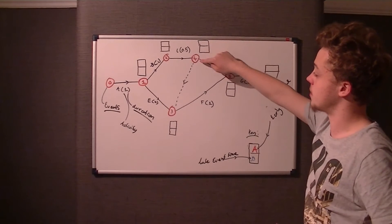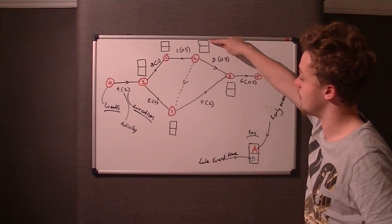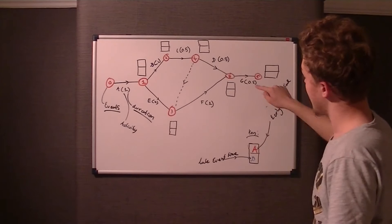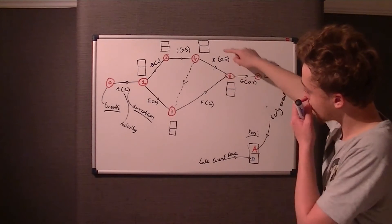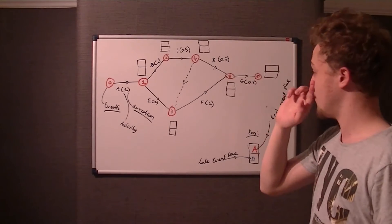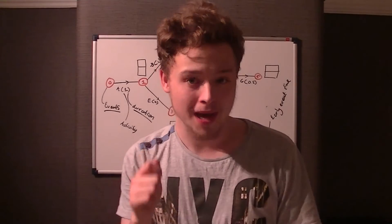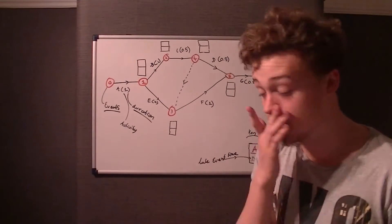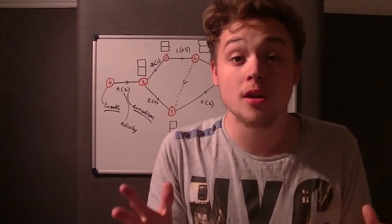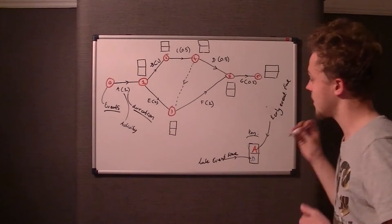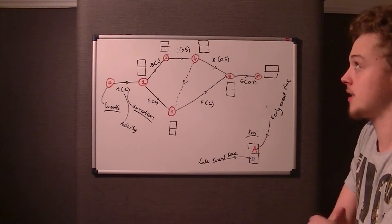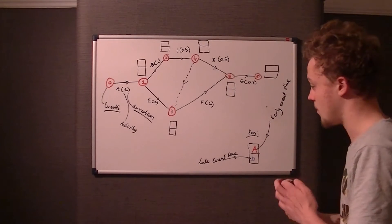For example, the two numbers associated with event four: the Early Event Time and the Late Event Time for event four — if they are the same — and similarly for event five — we say it's a critical event. In other words, we can't delay it happening. That is essentially when something called the float is equal to zero.